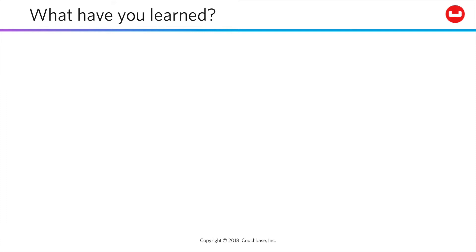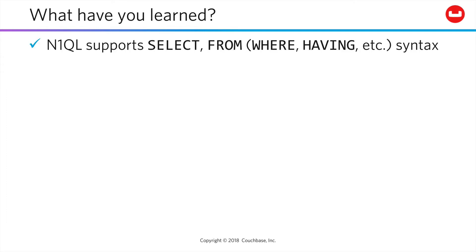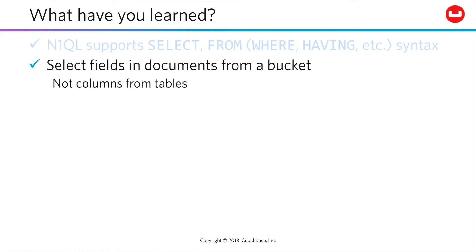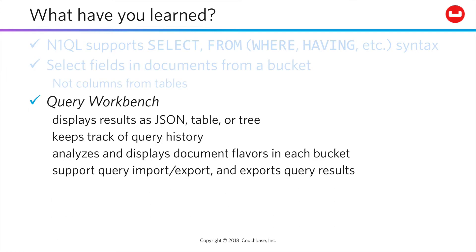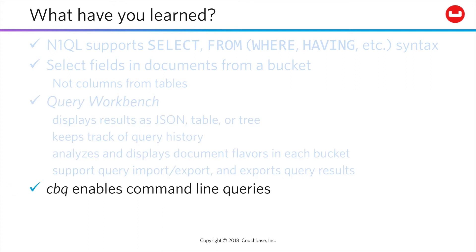Most importantly, you see that N1QL is quite familiar once you adapt to the notion of selecting fields from documents in a bucket rather than columns from a table. Query Workbench provides a great place for learning this. It'll even display your results as a table for familiarity, or as JSON or a tree. It will keep track of your query history for iterative editing. It analyzes your documents to give insight into their structure and quickly reference available indexing. It lets you import or export queries and export resulting data sets. Or, if you're the command line type, we've got you covered there too.